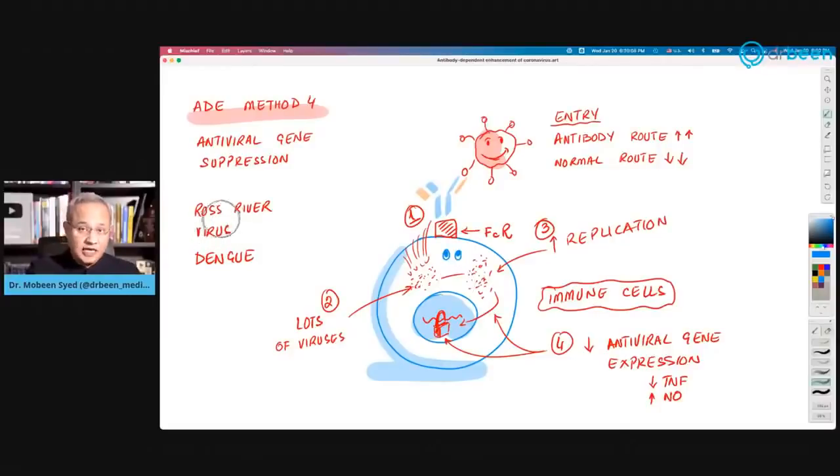What kind of viruses behave this way? Ross River virus, Dengue virus. The result of this mechanism is that antiviral genes of our cells are not working correctly. And we know SARS-CoV-2 does that.